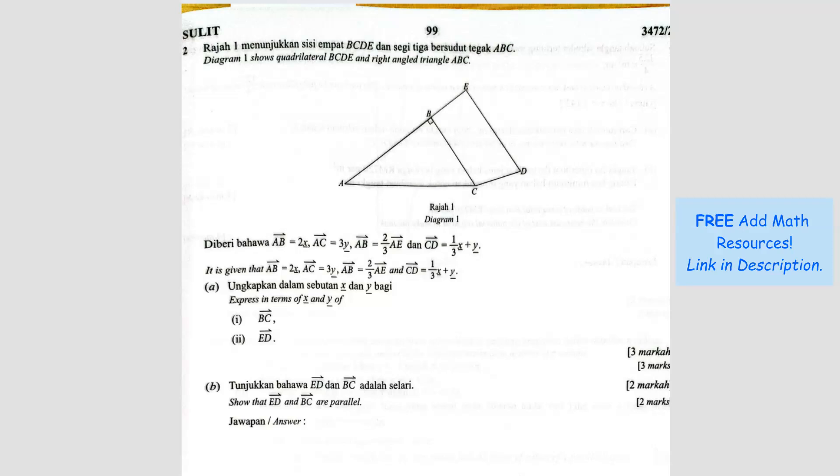They said AB is 2X, so this is 2X. And then AC is 3Y, AC is here 3Y.